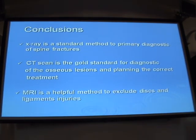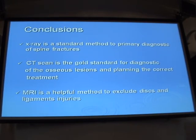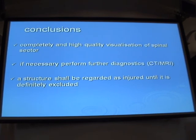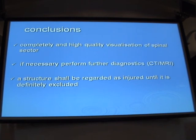In conclusion: X-ray is the standard method for primary diagnosis of spine fractures. CT scan is the gold standard for diagnosing osseous injuries and planning correct treatment. MRI is effective for excluding disc and ligament injuries, and in special cases to assess vascular anatomy for operative planning. A structure should be regarded as injured until it is definitively excluded. We use X-ray first, CT for bone injuries, and MRI to assess discs, ligaments, and soft tissues.